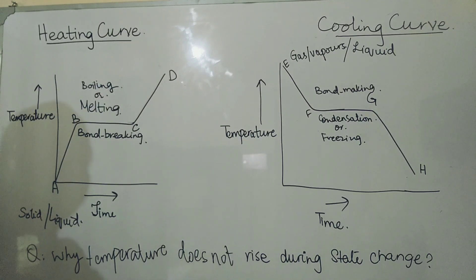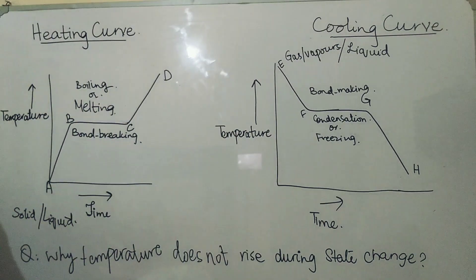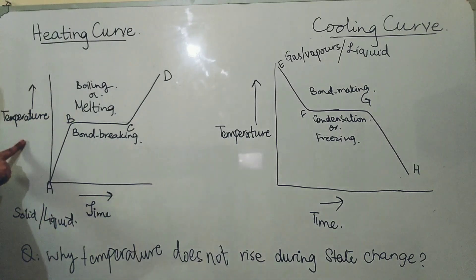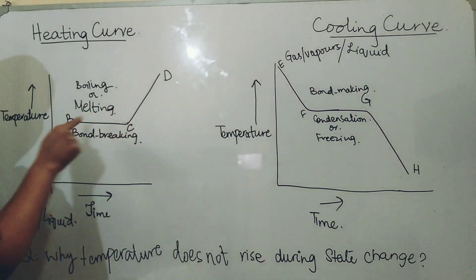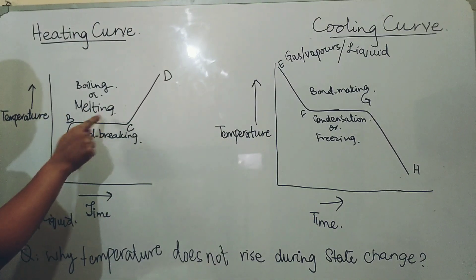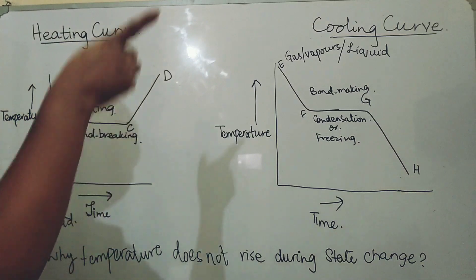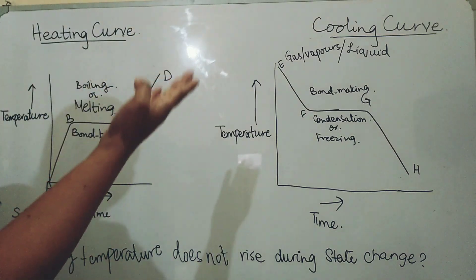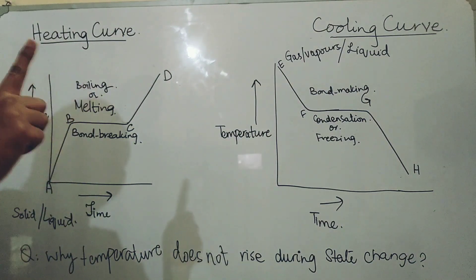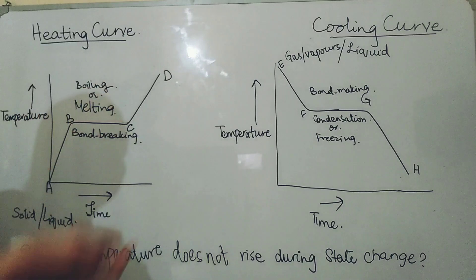So the temperature does not change in the cooling and the heating curve during a state change. The second question observed in past papers is: in the heating and the cooling curve, at what point do you observe both states occurring? If it is a heating curve, then from B to C, as the solid has started melting, both solid and liquid are present. In the cooling curve, if you are cooling a liquid, then from F to G both solid and liquid are present, and if you are cooling a gas, then from F to G both gas and liquid are present.